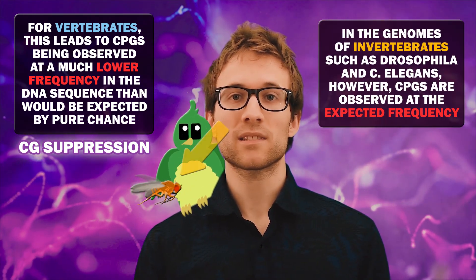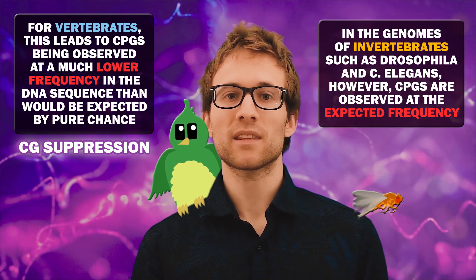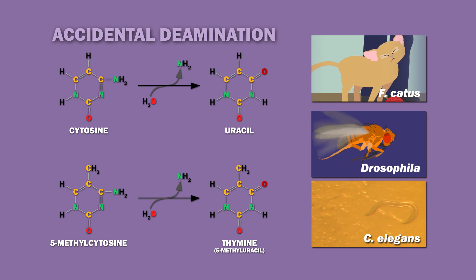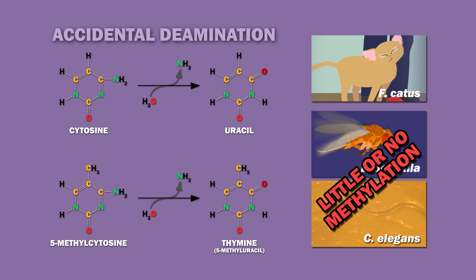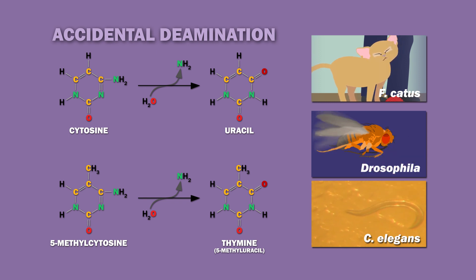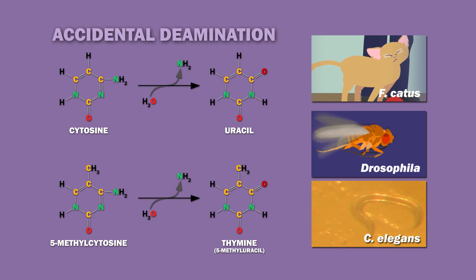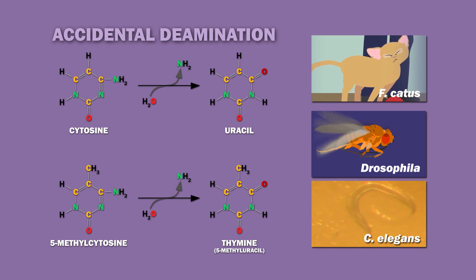In the genomes of invertebrates, such as Drosophila and C. elegans, CpGs are observed at the expected frequency. Unlike vertebrates, these organisms have little or no methylation, so they don't get accidental deamination of 5-methylcytosine to form thymine — only cytosine forming uracil. But vertebrates do have methylation, and cytosine tends to get methylated when it is followed by guanine, leading to its mutation to thymine.